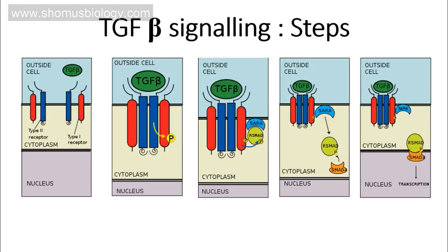Once SMAD 4 attaches to the phosphorylated SMAD 2/3 complex, they act as a transcription factor, enter the nucleus, and activate certain genes. Transcriptional activation of those genes leads to cell growth and proliferation, and thus the transformation of a normal cell into a cancerous cell by providing two important properties: one, metastasis, and two, angiogenesis. That concludes the TGF beta signaling overview.